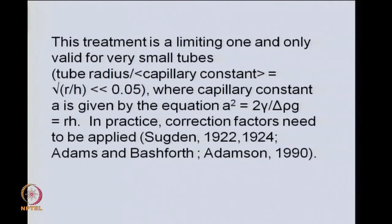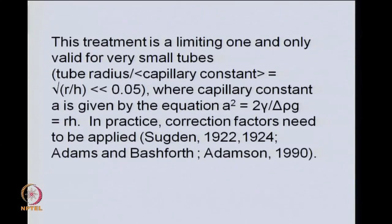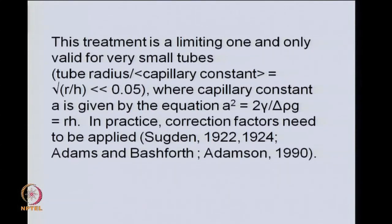One could proceed to estimate the surface tension from the maximum pressure using this method, but there are certain limitations. This is a limiting treatment valid only for very small tubes. We need to know what the capillary constant is: A² = 2*gamma / (delta_rho × g) = R × H. The tube radius divided by the capillary constant — that is, sqrt(R/H) — should be much less than 0.05 for this method to give a dependable value for the surface tension.